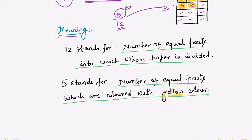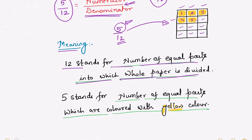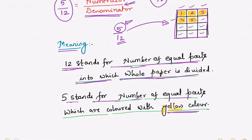The denominator 12 stands for the number of equal parts into which a whole paper is divided. You can make one such paper and divide it into 12 equal parts. So the denominator 12 stands for the number of equal parts of the whole, and the numerator 5 stands for the number of equal parts which are colored with yellow.